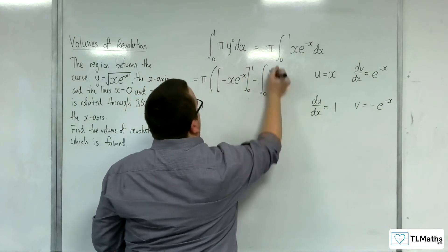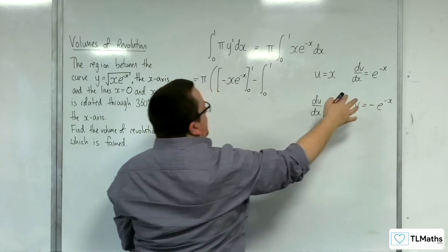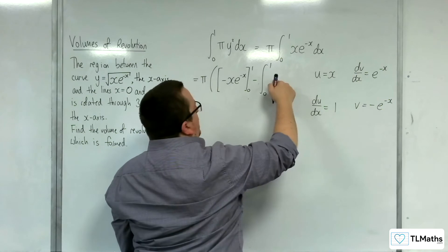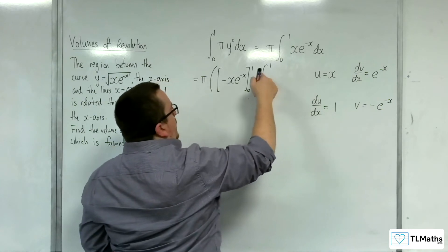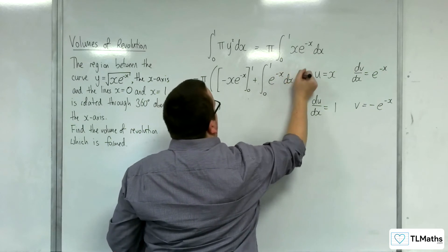Take away the integral between 0 and 1 of v times du by dx. I'm going to have this minus e to the minus x in here, so I can bring that minus out and cancel it with that one to make a plus.